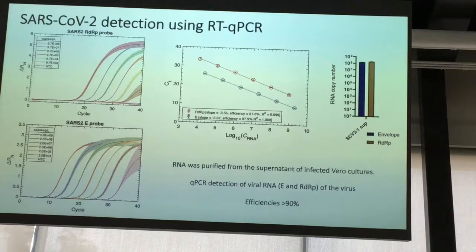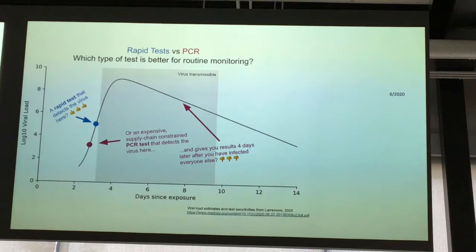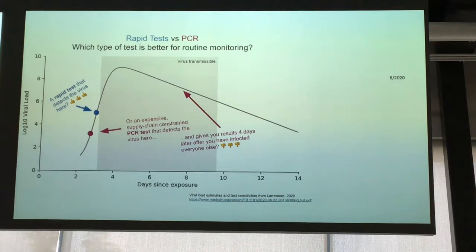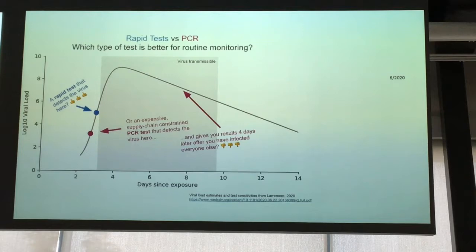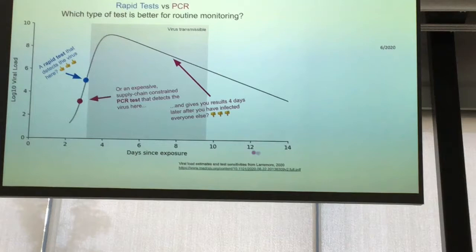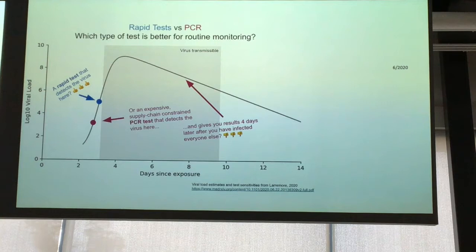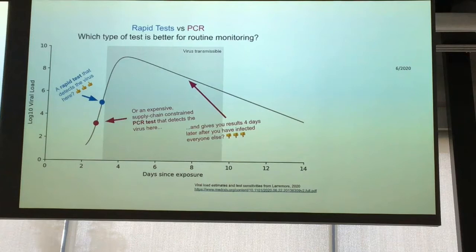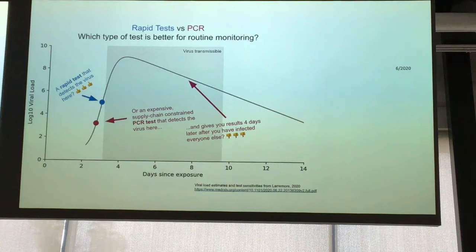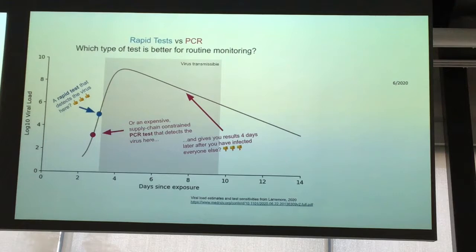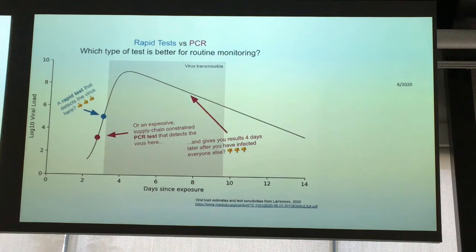qPCR is a very sensitive test — the limit of PCR detection is quite low. If you look at the log of viral load versus days since exposure: you're exposed, the virus replicates really quickly, and qPCR can measure down to about 10 to the 3 copies per mL — that's 1,000 copies per mL. It's a really low, very sensitive test.